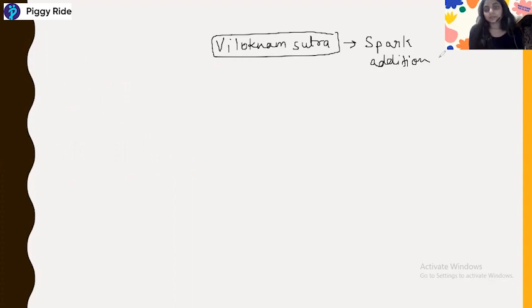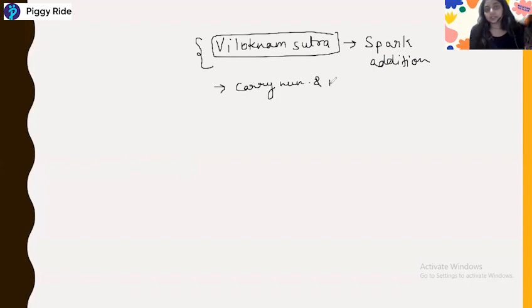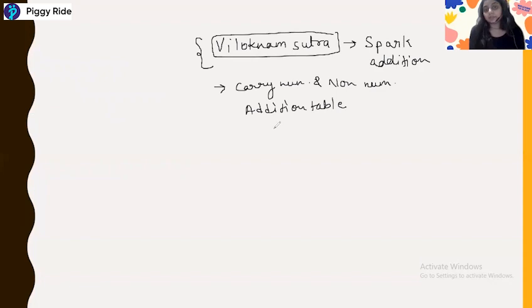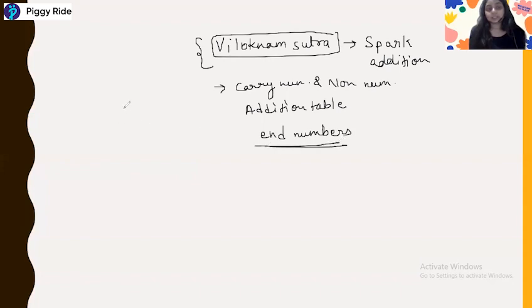In our first class we discussed carry numbers and non-carry numbers, as well as the addition table. I told you to go through the table thoroughly and to remember just the end numbers of every addition — the end number of the result you get by adding two numbers.